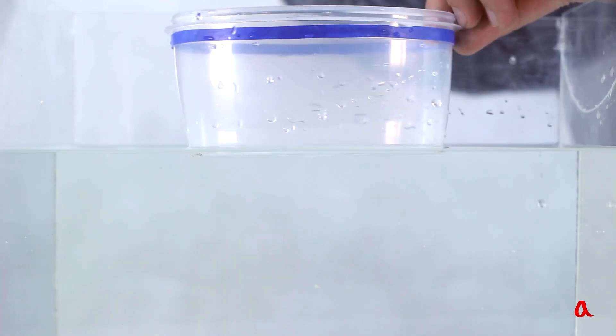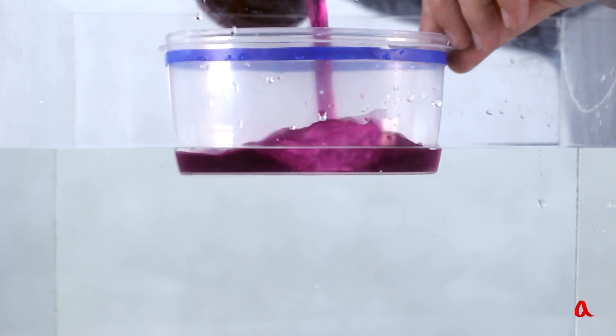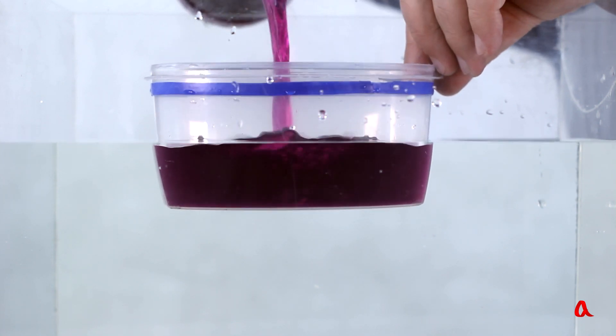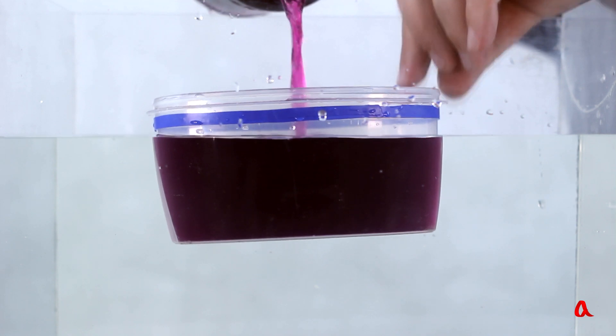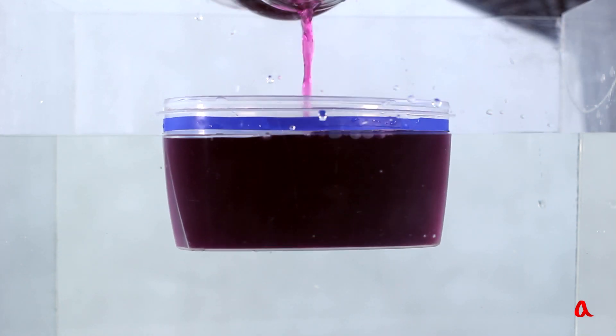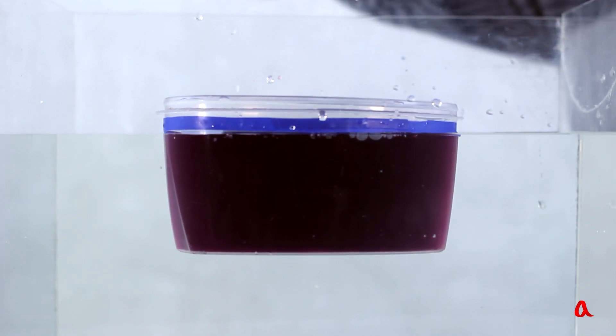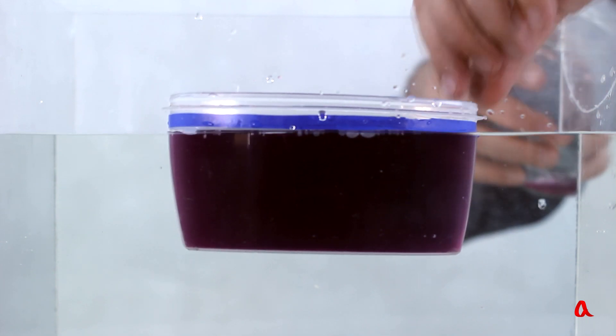Let's pour some colored water inside the container. We see that in the process of pouring the levels of water within the container and outside it nearly coincide. It all looks like water is floating on water.